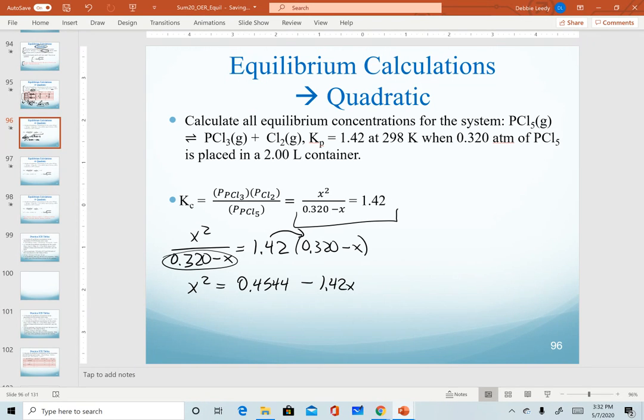And now again, I need to move everything to one side to set it equal to zero. I prefer starting with a positive x squared. So I'm going to move both of my quantities on the right over to the left. So we get x squared plus 1.42x minus 0.4544. And all of that is equal to zero.